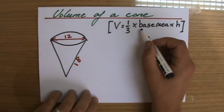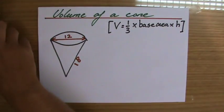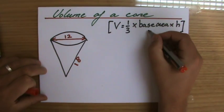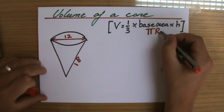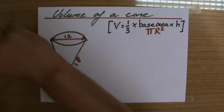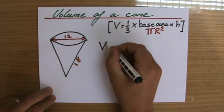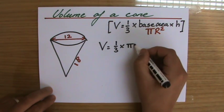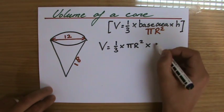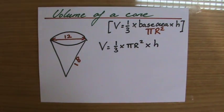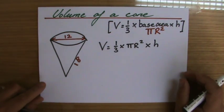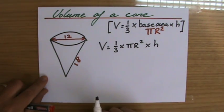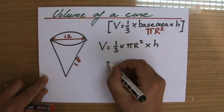You already realize the base is a circle, so that is π r squared. The area of the base is π r squared. For yourself you could already write down that it is one-third times π r squared times the height.